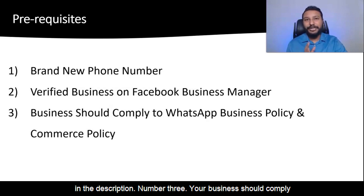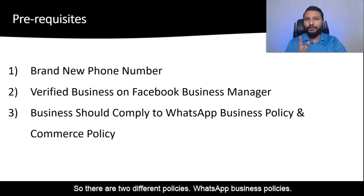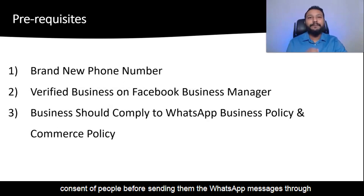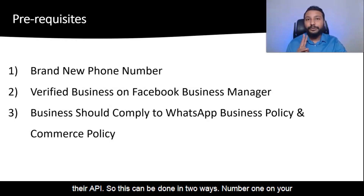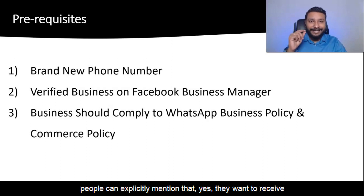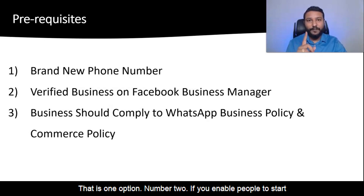Number three, your business should comply with the WhatsApp Business Policy and the WhatsApp Commerce Policy. WhatsApp Business Policy simply summarizes that you should have the consent of people before sending them WhatsApp messages through the API. This can be done in two ways. Number one, on your website, if there is a form, you can add an opt-in where people can explicitly mention that they want to receive communication from your business through WhatsApp.